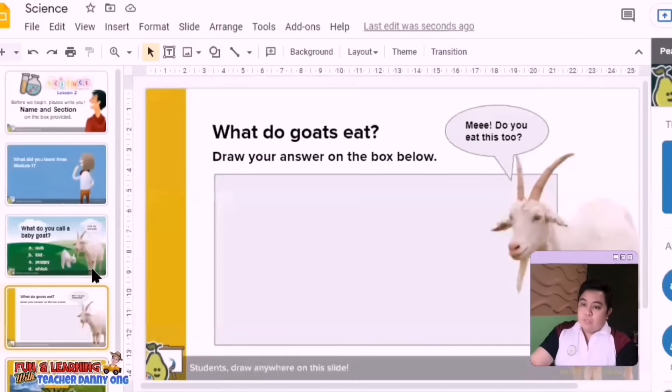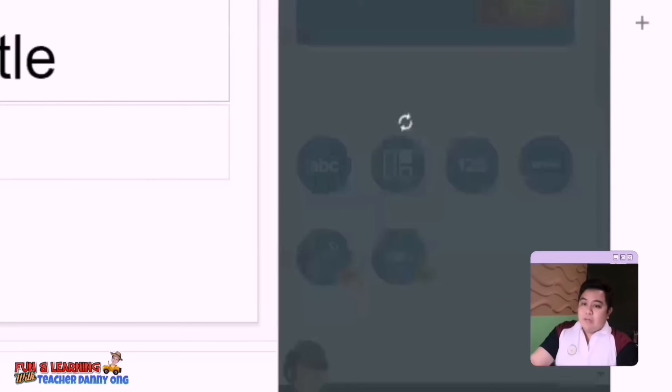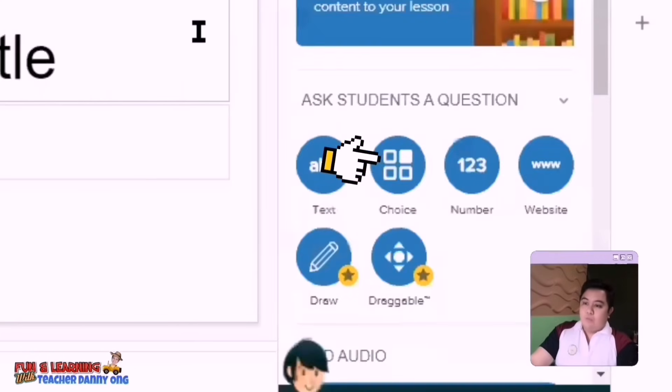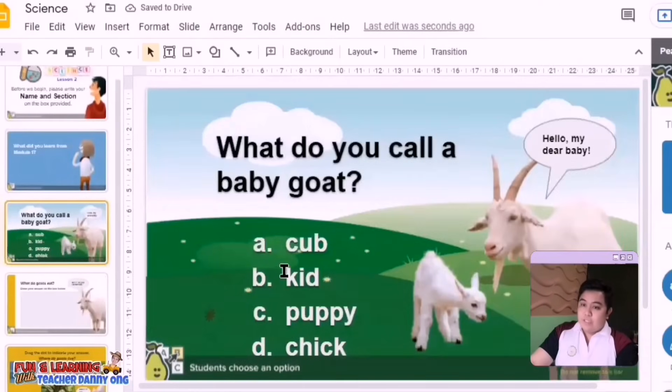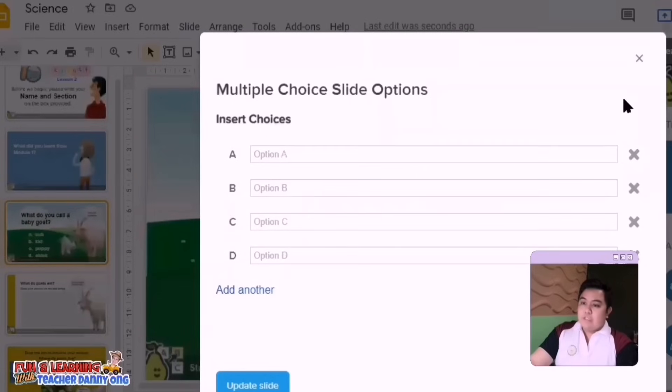So let's try to add multiple choice for example. In here, you can create true or false or multiple choice question. Then you'll see the percentage of students who answered in each choice. Let's have a ready-made one. Let's say your lesson is about animals and the question is what do you call a baby goat? So simply click choice here, then input your choices here. Let's place the options we have.